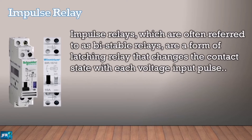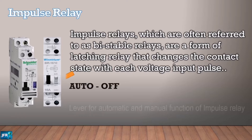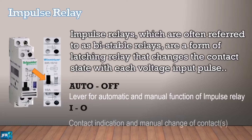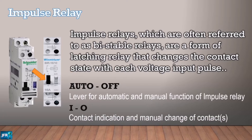Impulse relays, which are often referred to as bi-stable relays, are a form of latching relay that changes the contact state with each voltage input pulse. It has two lever switches: one is the auto-off, which is used to change the impulse relay function between auto and off. The other is the IO lever switch, which is a contact indicator and also used to manually change contact status.